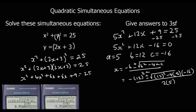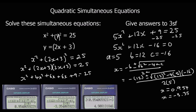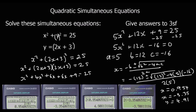There are two x values. To find the y values we use the linear formula — y equals 2x plus 3. So for x equals 0.954: y equals 2 times 0.954 plus 3 equals 4.91. And for x equals minus 3.35: y equals 2 times minus 3.35 plus 3 equals minus 3.71.